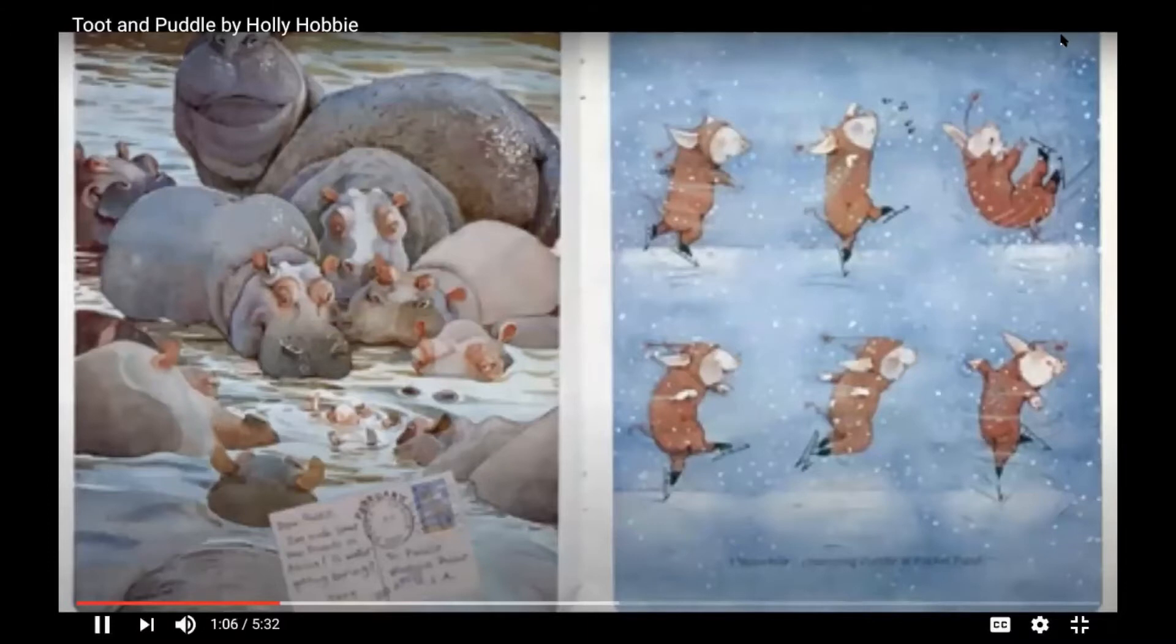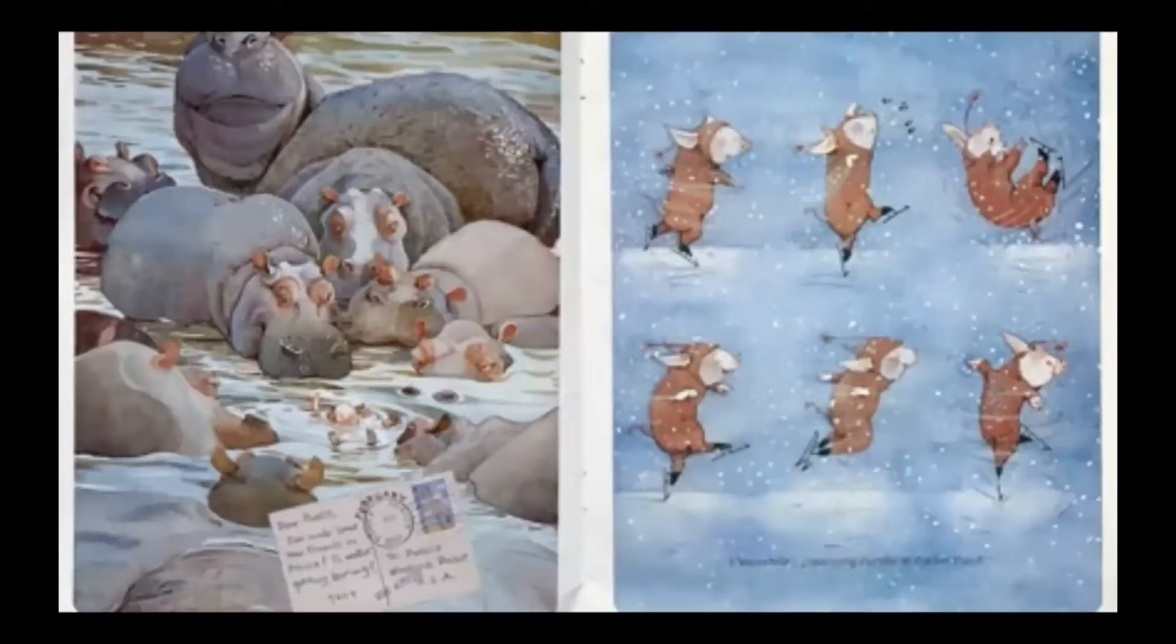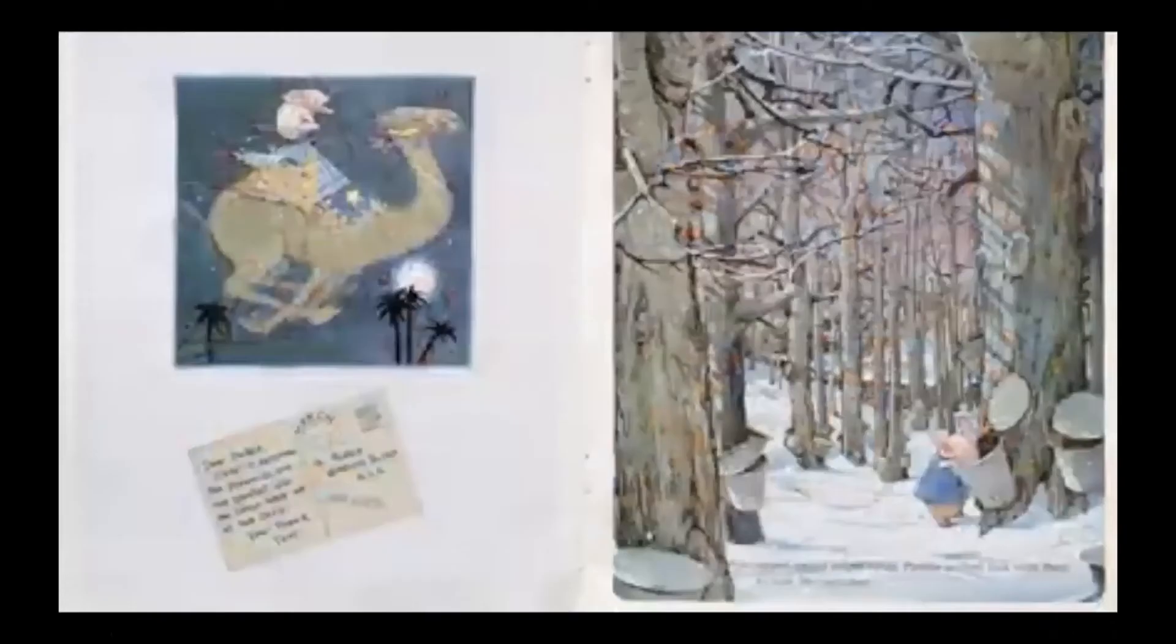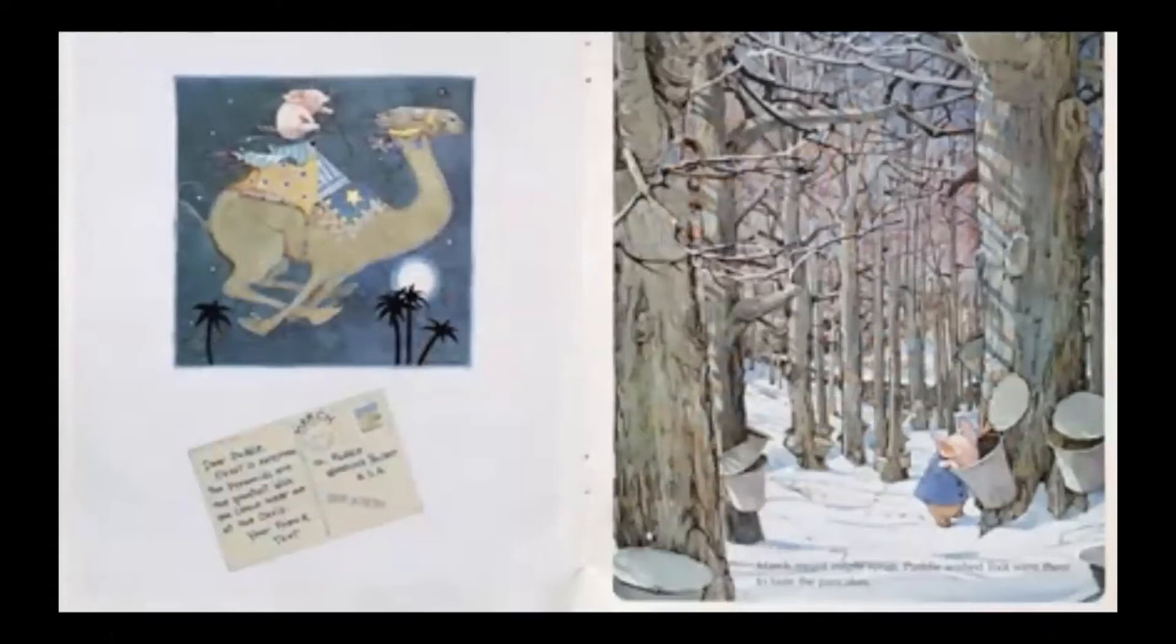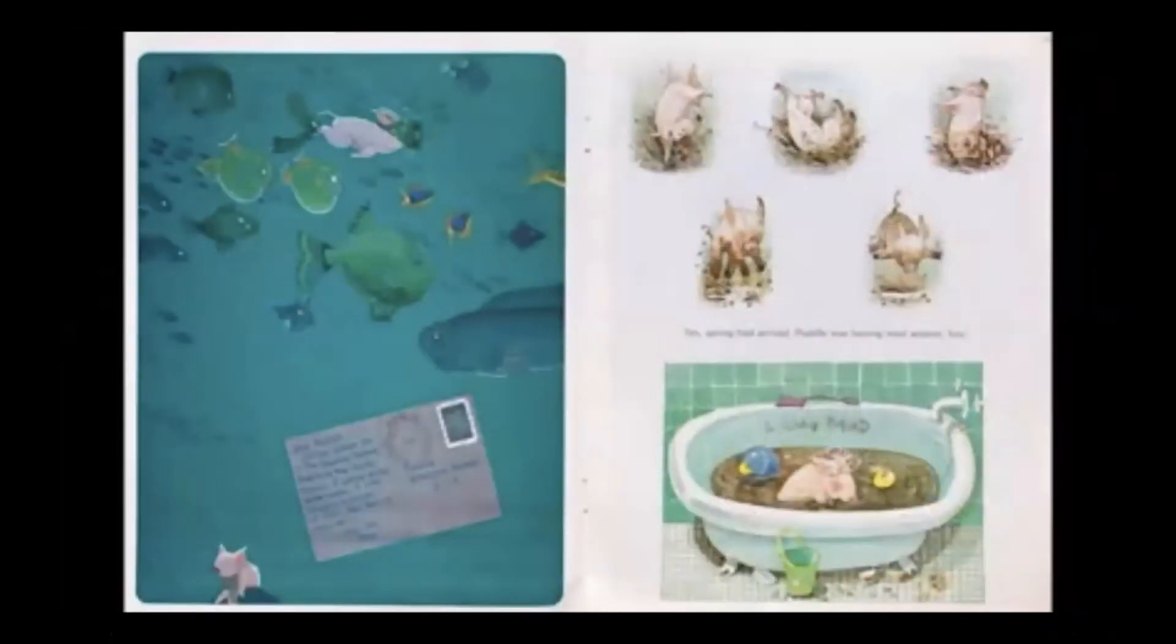Meanwhile, presenting Puddle at Pocket Pond. Dear Puddle, Egypt is awesome. The pyramids are the greatest. Wish you could meet me at the Oasis. Your friend, Toot. March meant maple syrup. Puddle wished Toot were there to taste the pancakes. Dear Puddle, can you believe I'm in the Solomon Islands? There in the Pacific Ocean. I spend all day underwater. I love being in a school of fish. Has spring come yet? Your pal, Toot.